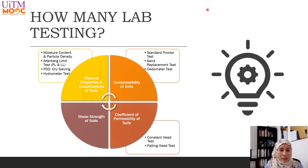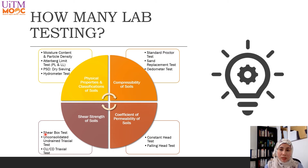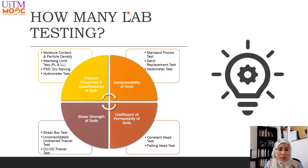The last topic is shear strength of soil. There are three to four types of testing depending on the conditions of the soil. Shear strength is the maximum resistance to shearing stresses. By doing the shear box test, unconsolidated undrained triaxial test, consolidated undrained, and consolidated drained triaxial test, students can find out the cohesion and the angle of internal friction of soil, which are useful in many engineering designs such as foundations and retaining walls.